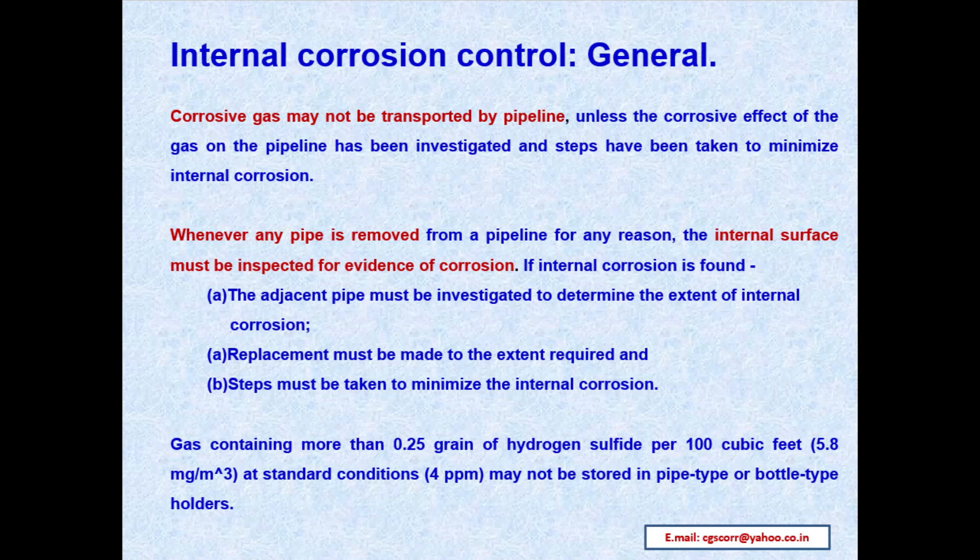Gas containing more than 0.25 grain of hydrogen sulfide per 100 cubic feet (5.8 mg/m³ at standard conditions, i.e., 4 ppm) may not be stored in pipe-type or bottle-type holders.